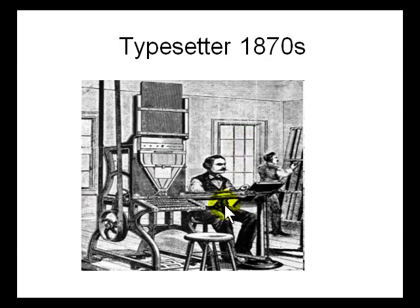In the 1870s, this is a typesetter and this is a printing press. He would type something, arrange the characters in a block, and then use that block for printing.